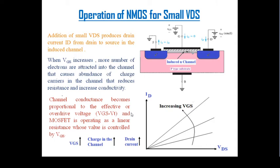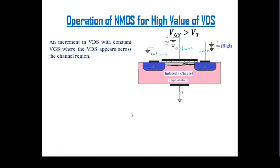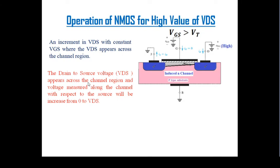Now we consider the operation of NMOS for a high value of VDS. When VDS increases, the channel takes a tapered shape. With increasing VDS at constant VGS, the VDS appears across the channel region. The drain-to-source voltage VDS appears across the channel region, measured along the channel from the source — which is 0V — to the drain end at VDS.